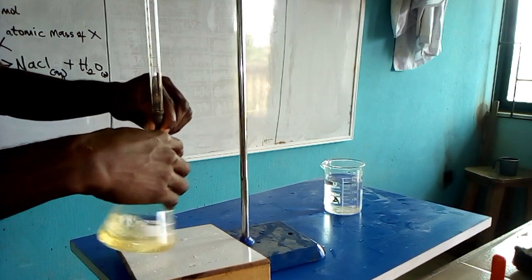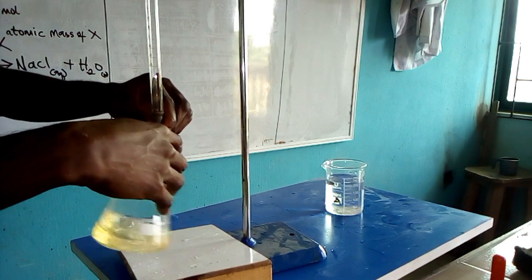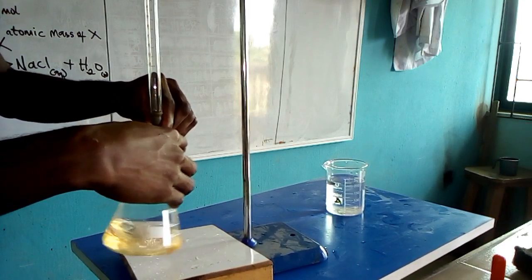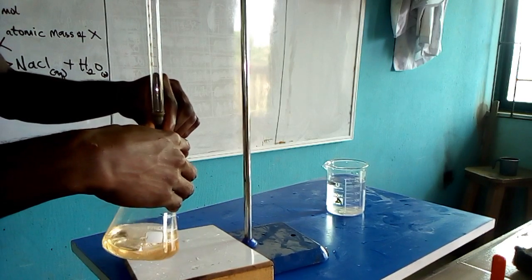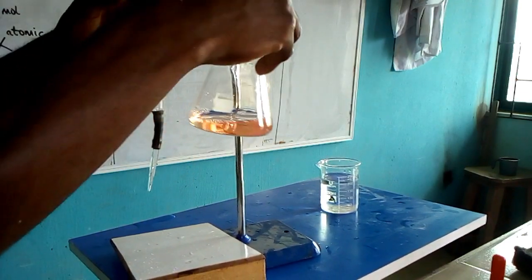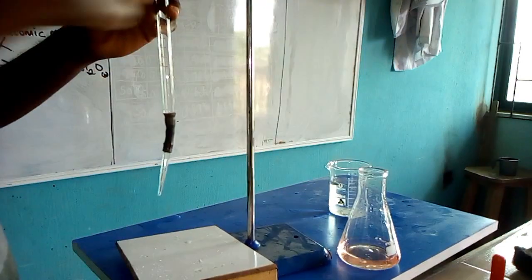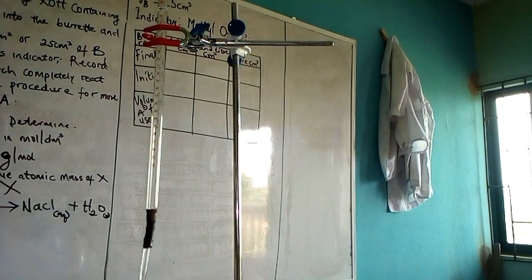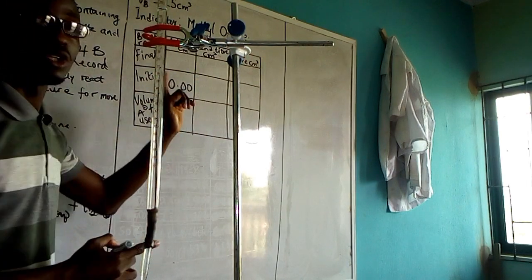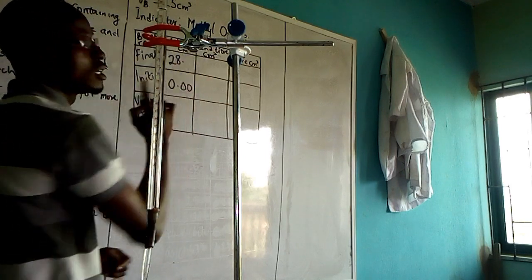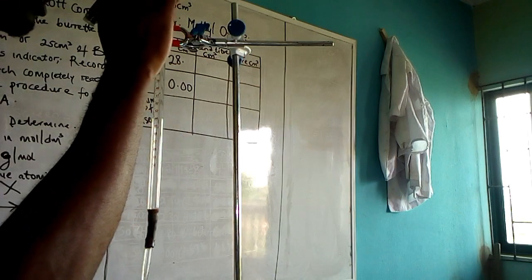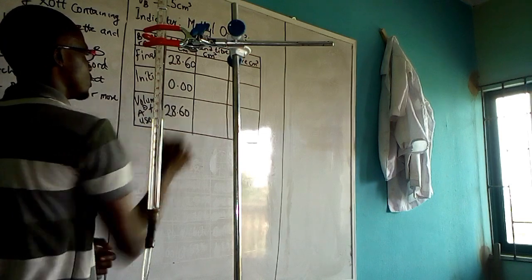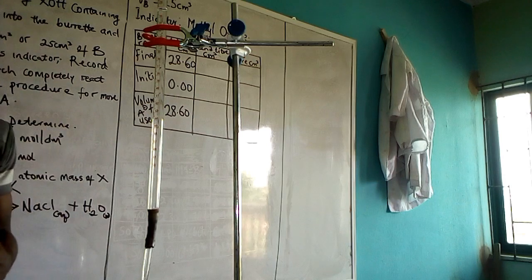We need to be careful since this is the first titration — we need to know the range at which the color change occurs. The color is beginning to change, so I'm adding the acid carefully. The color has now changed. The final burette reading is 28.60 cm³, starting from 0.00, giving a titre of 28.60 cm³.